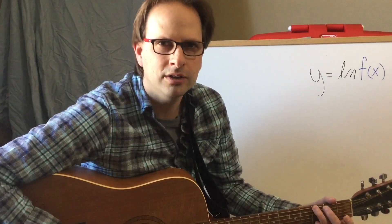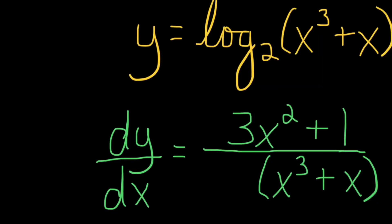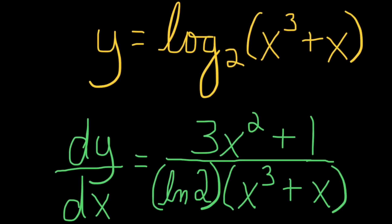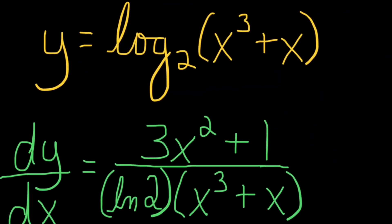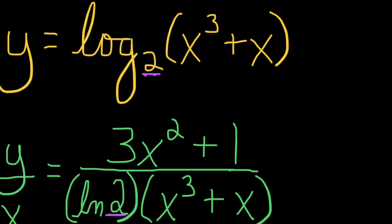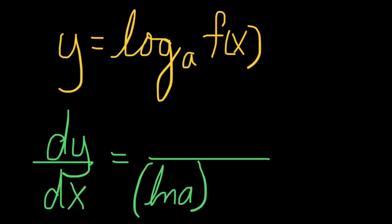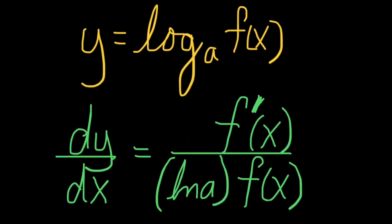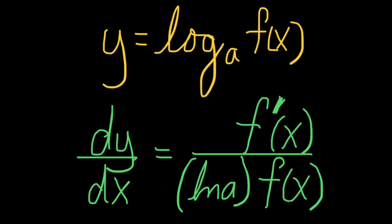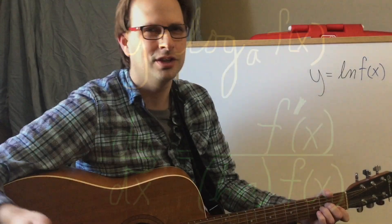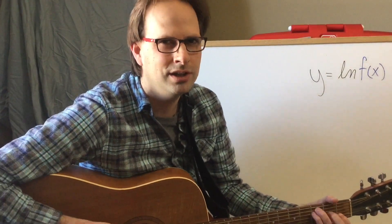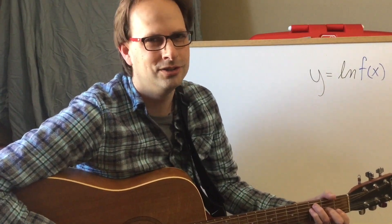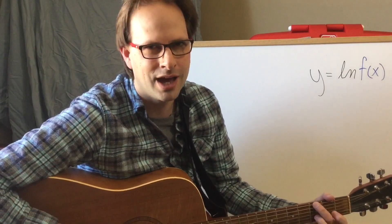Now what about a log with a base that is not e? You can still just sing it out, but you'll have to pay a fee. Put ln of the base on the bottom — consider it a tax. To use a base that's strange, it's no big deal.